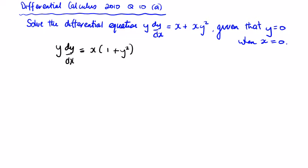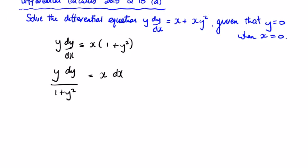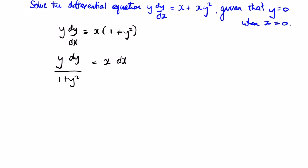If I multiply by dx, I'm going to get y dy divided by 1 plus y squared, and that's going to be equal to x dx. I can integrate now at this point. We're told that when x equals 0, y equals 0.